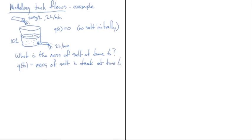Referring back to the previous video on modeling tank flows, we found that q'(t) — suppressing the 'of t' — is equal to F_inflow minus F_outflow. Now we just have to figure out how to express the inflow rate and outflow rate in terms of the quantities given in the problem.